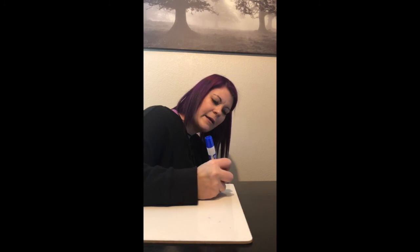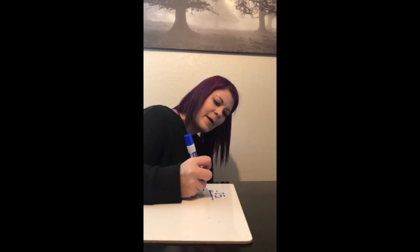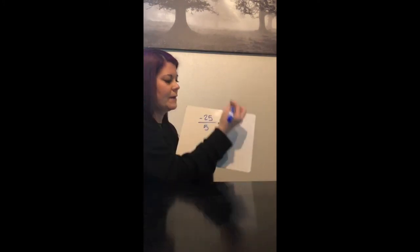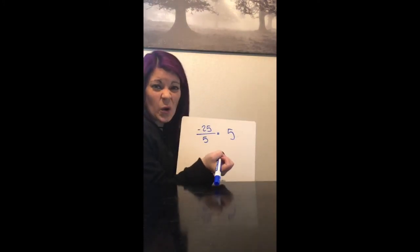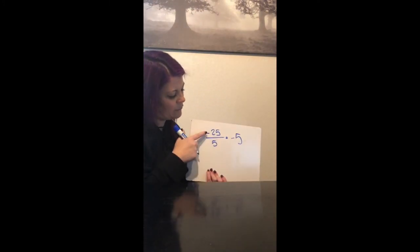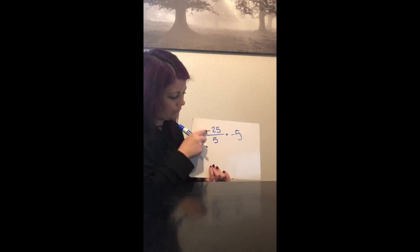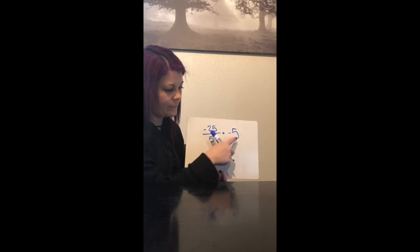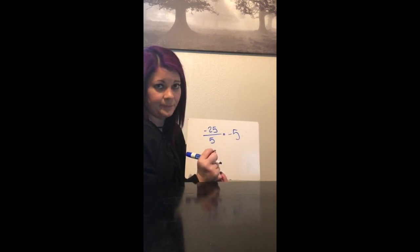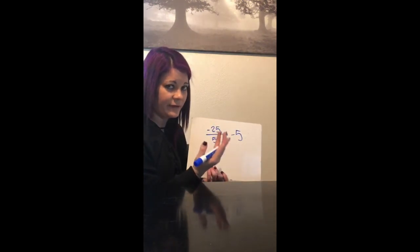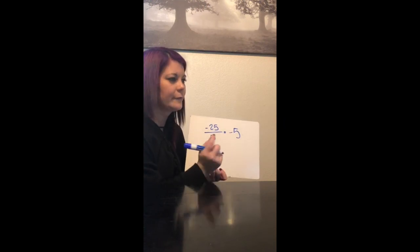Let's do a division example: negative 25 divided by positive 5. 25 divided by 5 is 5, and we know our answer's going to be negative because one's negative and one's positive — it's not two wrongs. If one's negative and one's positive, it's always going to be negative. Different signs equals negative, always.